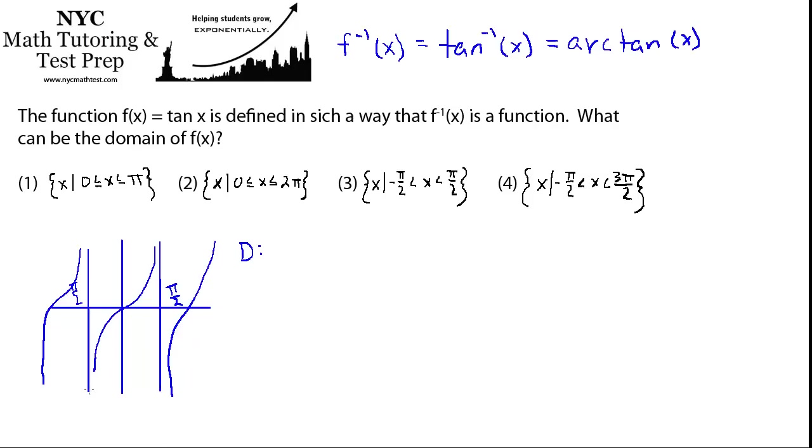So we couldn't put in negative π/2 or π/2, but we could put in numbers that are less than that, numbers that are greater than that, everything up to π/2. We can't put that in, and then we could put more values in. And then eventually we can't put in 3π/2, but then we could put more values after that. So the domain is everything except values that are divisible by π/2.